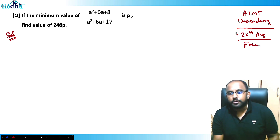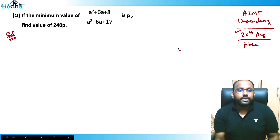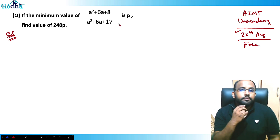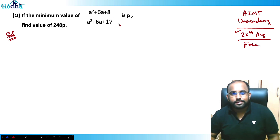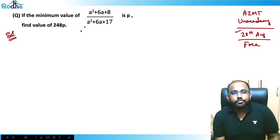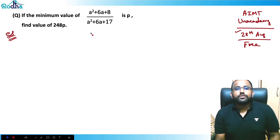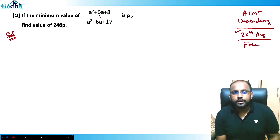So give this next AIMT on 28th August. Now look at this question — it was asked in the last AIMT. It says: what is the minimum value of (A² + 6A + 8) divided by (A² + 6A + 17)? The minimum value is P — find the value of 248P.